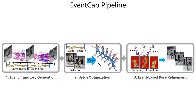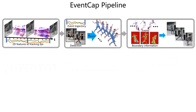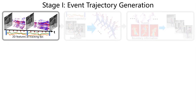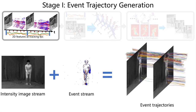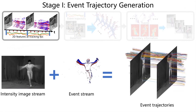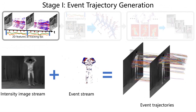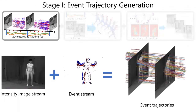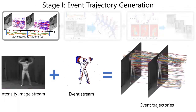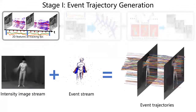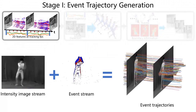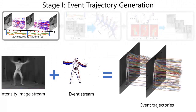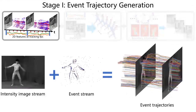Our motion capture pipeline consists of three stages. First, we track sparse event patches in an asynchronous manner, based on the hybrid input from the event camera. Then these patches are aligned to compose spatiotemporal event trajectories.